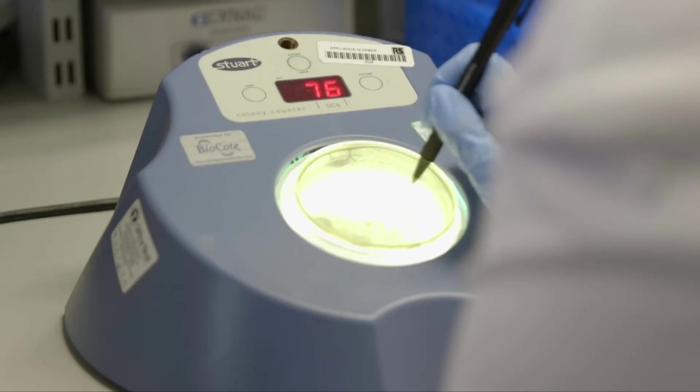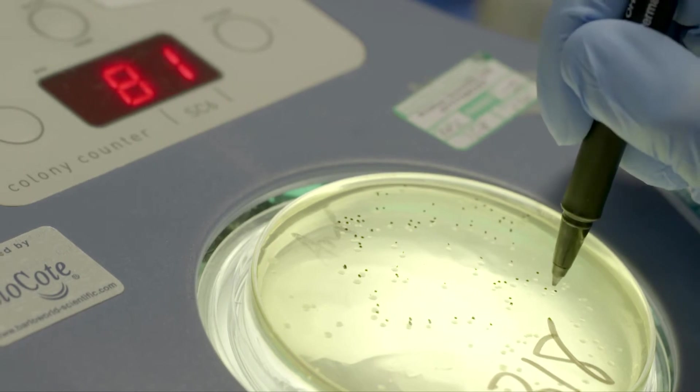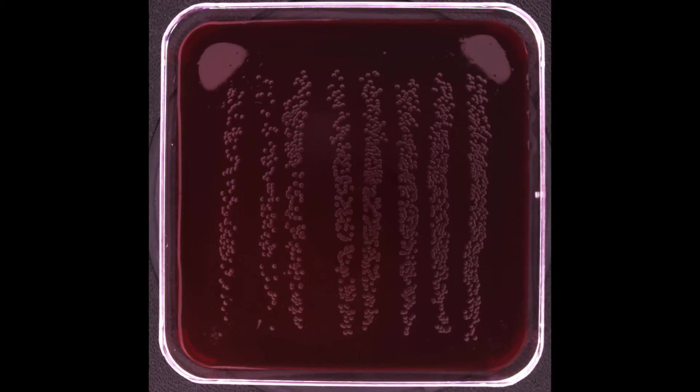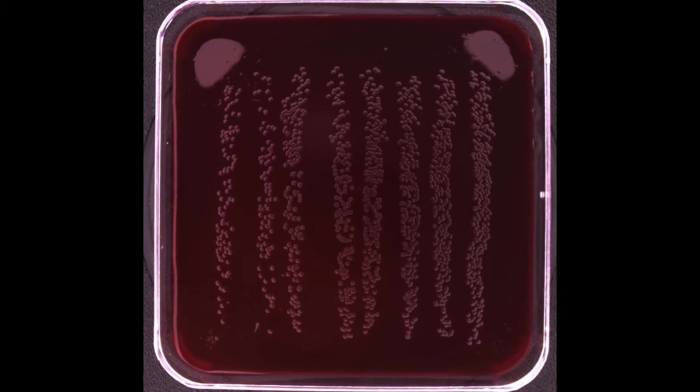When the scientists first started doing their SBA assays, they would plate one well of the bacteria onto the plate and then had hundreds of very small colonies to count by eye, which was very tedious and laborious.